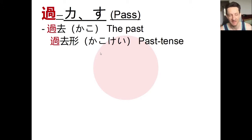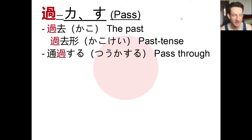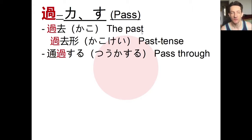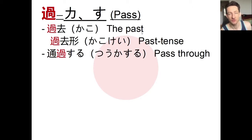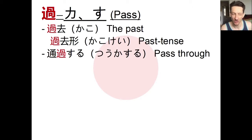Next we have 通過する, which means to pass through or pass by. We can describe passing cars: 通過する車. You might say to someone 通過する車に気をつけてください — please be careful of passing cars.